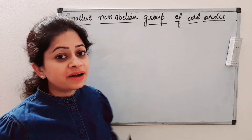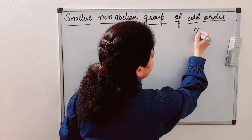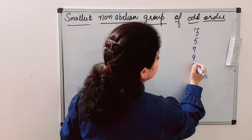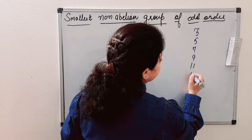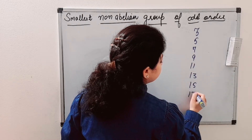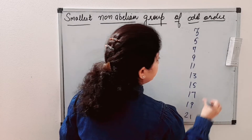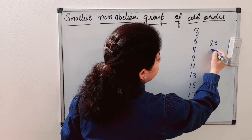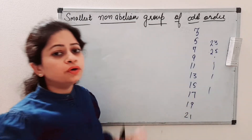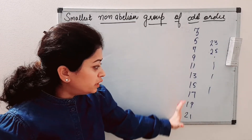For this, we will write some odd numbers: 3, 5, 7, 9, 11, 13, 15, 17, 19, 21, 23, 25, and so on. We will analyze each of these.